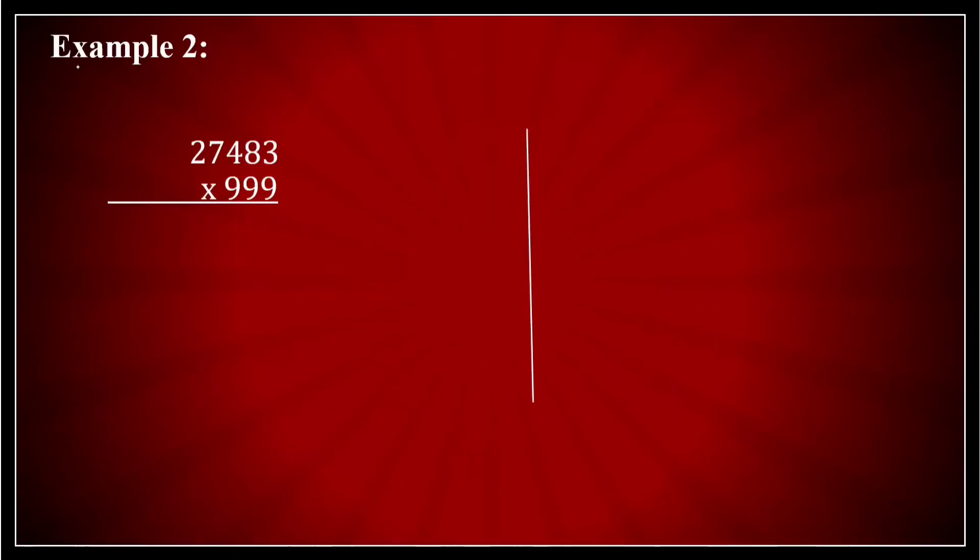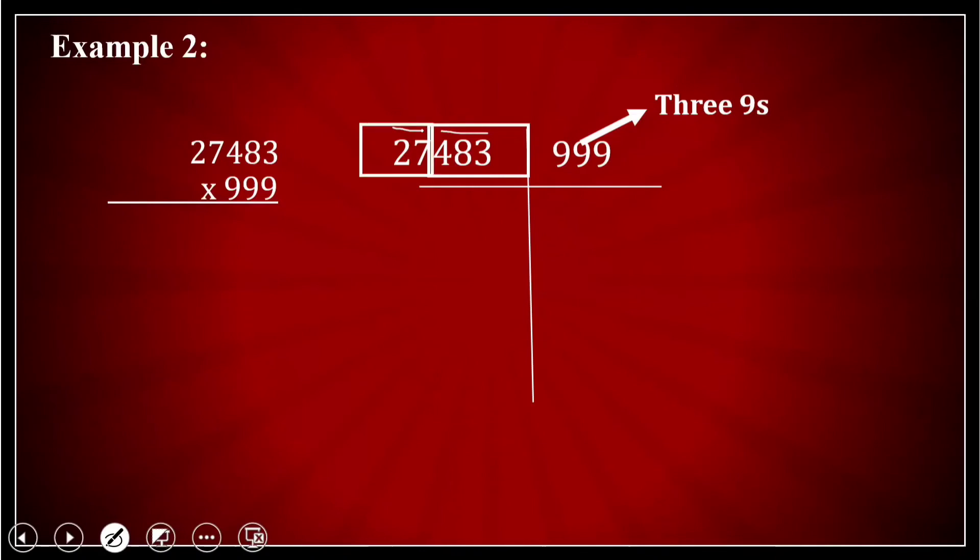So let us check it up. I'll write the number horizontally as I told you. 27483 on the left side and 999 on the right side. How many digits are there? How many nines are there? There are three nines. So I will take 483 separately and 27 separately. So 483 I will take on the right side and 27 I'll take on the left side.